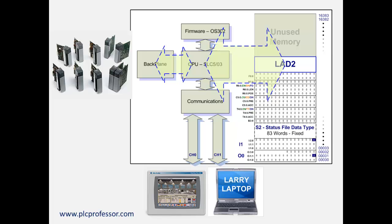The actual protocol for channel 0 is DF1. Channel 1, depending on the particular processor — here it shows a SLC 503 CPU — that's DH-485, data highway 485. If this were a 504, then channel 1 would be data highway plus. If this were a 505, channel 1 would be Ethernet.